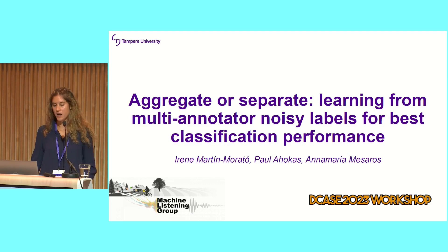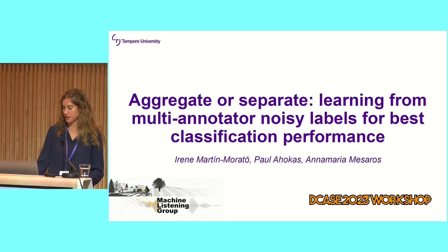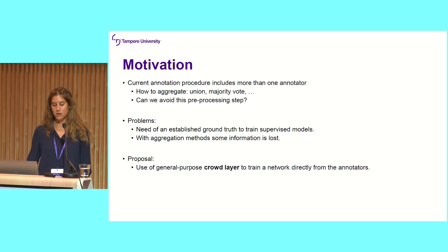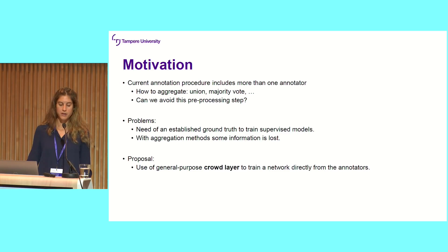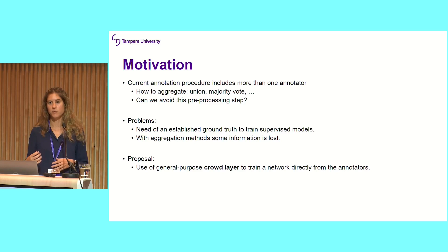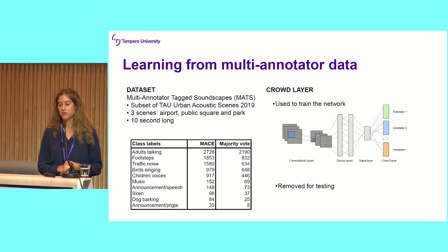Hello everyone. I'm Irene Martin, and we presented this work entitled 'Aggregate or Separate: Learning from Multi-Annotator Noisy Labels for Best Classification Performance.' The motivation was to explore how to best use data from multiple annotators. Traditionally, this data is aggregated using majority vote, but we consider that this pre-processing step can be skipped, although we still need a ground truth dataset for evaluation. With aggregation, we also lose information that could be useful for the network. We propose the use of a crowd layer, which takes as input data directly from all annotators.